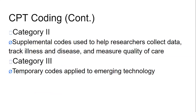Category 2 codes are supplemental codes used to help researchers collect data, track illness and disease, and measure quality of care. If you have tabbed your CPT book, you have a Category 2 tab and can see those codes there. Category 3 codes are temporary codes applied to emerging technology.